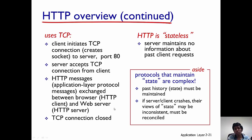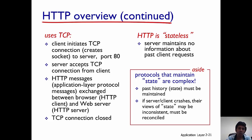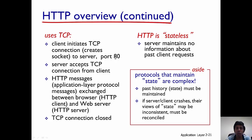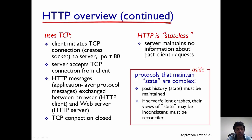HTTP uses TCP underneath — we'll get into details of TCP later. TCP is a reliable transport-layer protocol. To initiate a TCP connection, HTTP uses something called a socket. HTTP uses port number 80 to communicate — that's something you should remember. The server accepts the HTTP connection; when the HTTP request is sent, it accepts the TCP connection and then sends an HTTP response back. Once all data transfer has taken place, the TCP connection is closed.